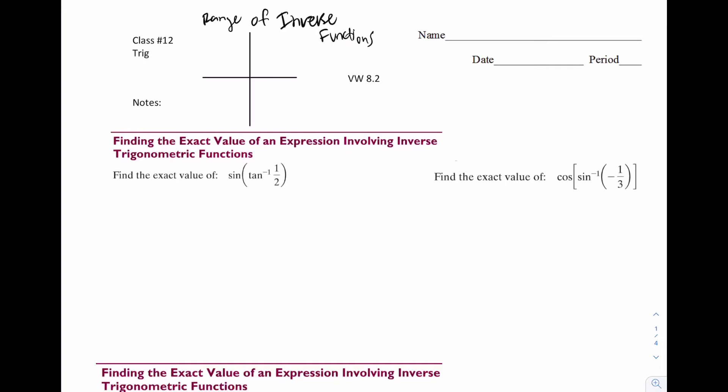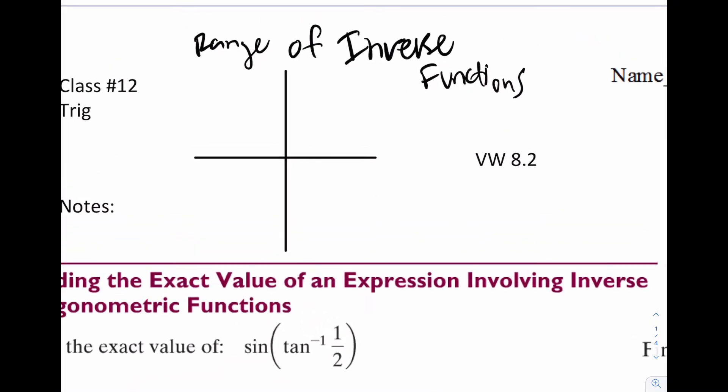Today is simply an extension of 8.1. So this lesson I think is a lot easier than the last one. We're gonna start by reviewing the range of the inverse function. So we've done this a ton of times. Hopefully now you recall, cosine is one and two, sine is one and four, tan is one and four.